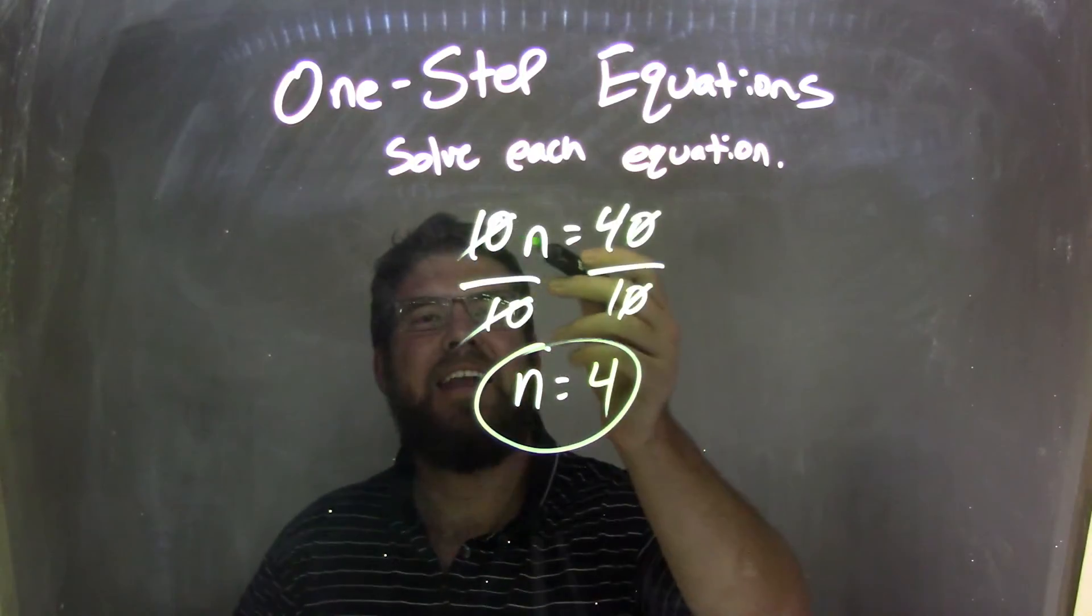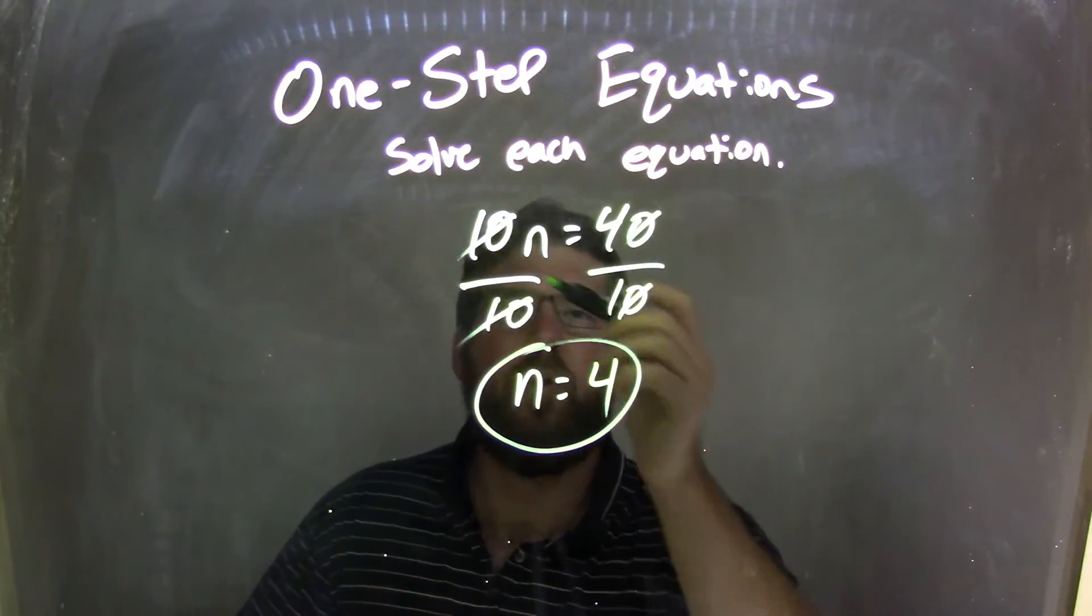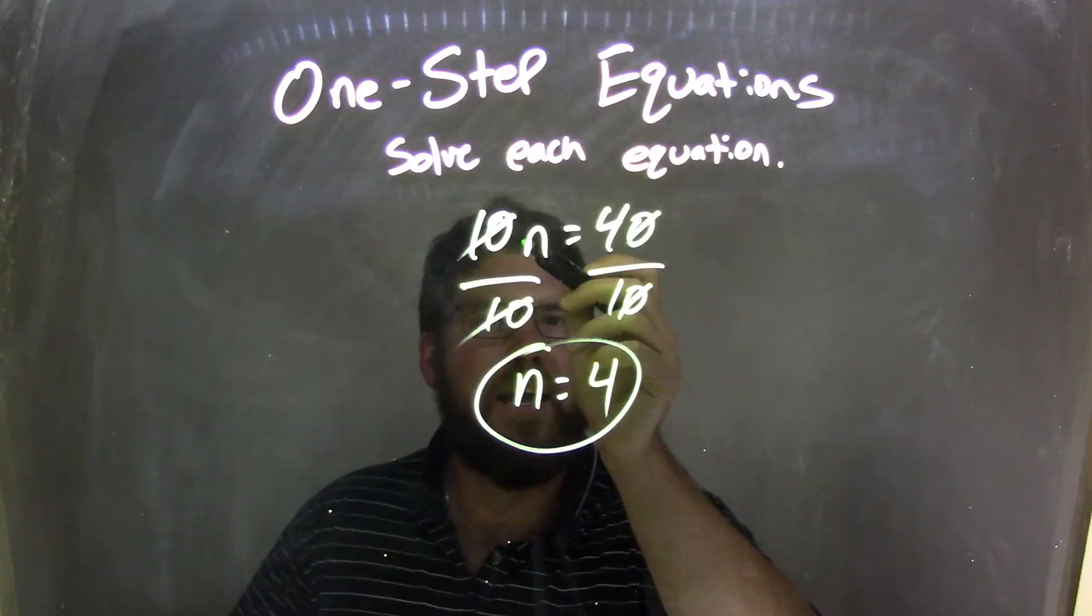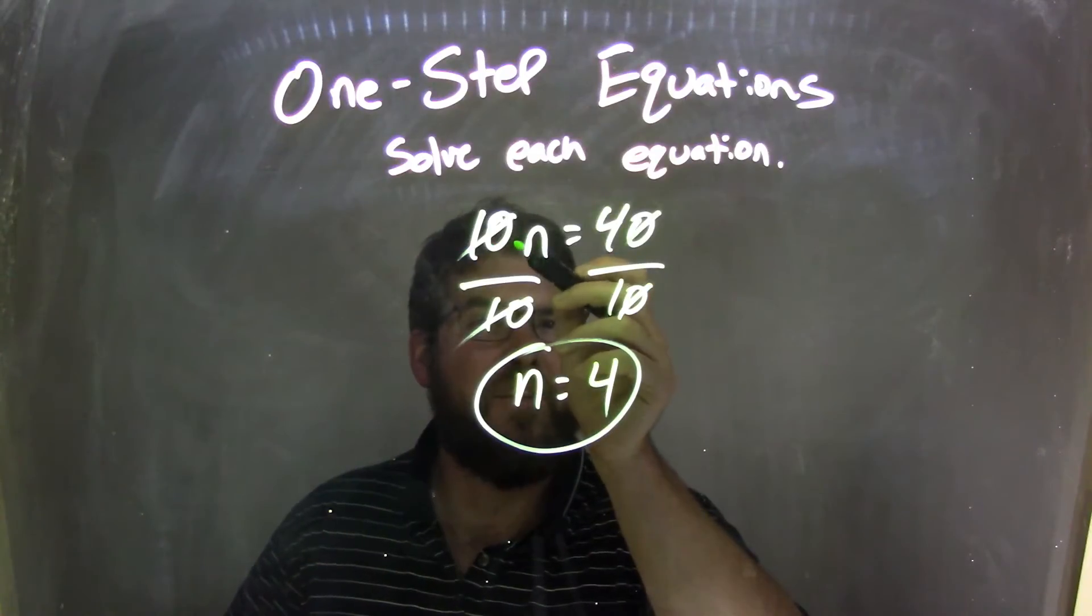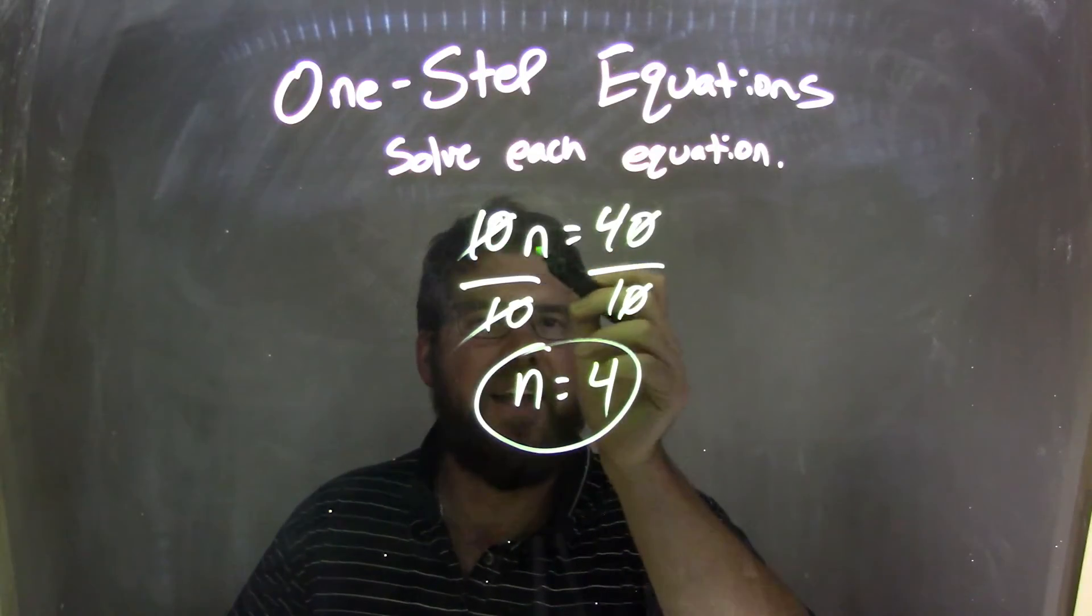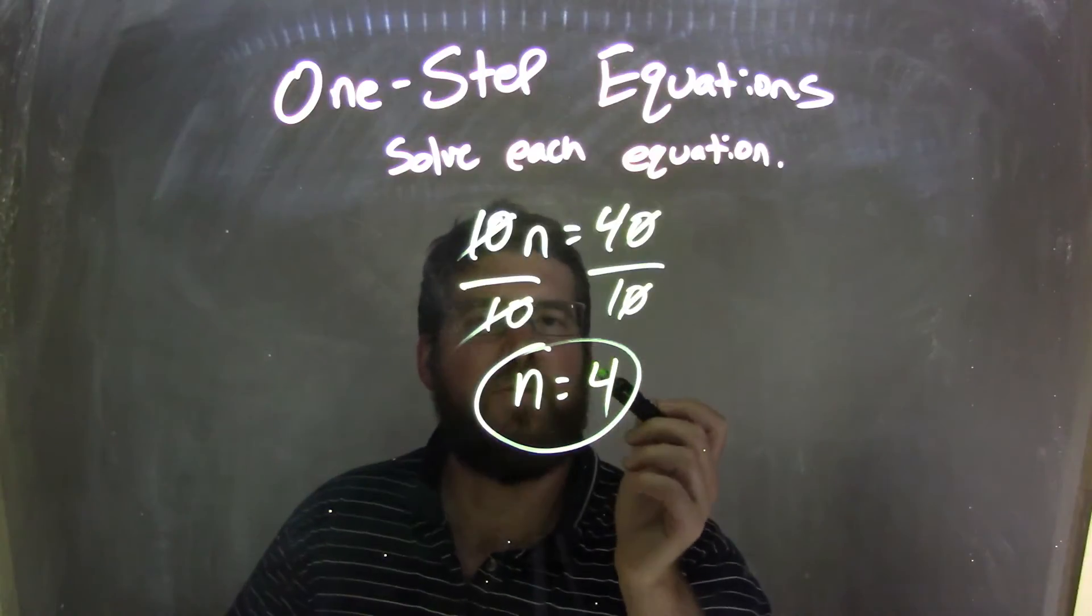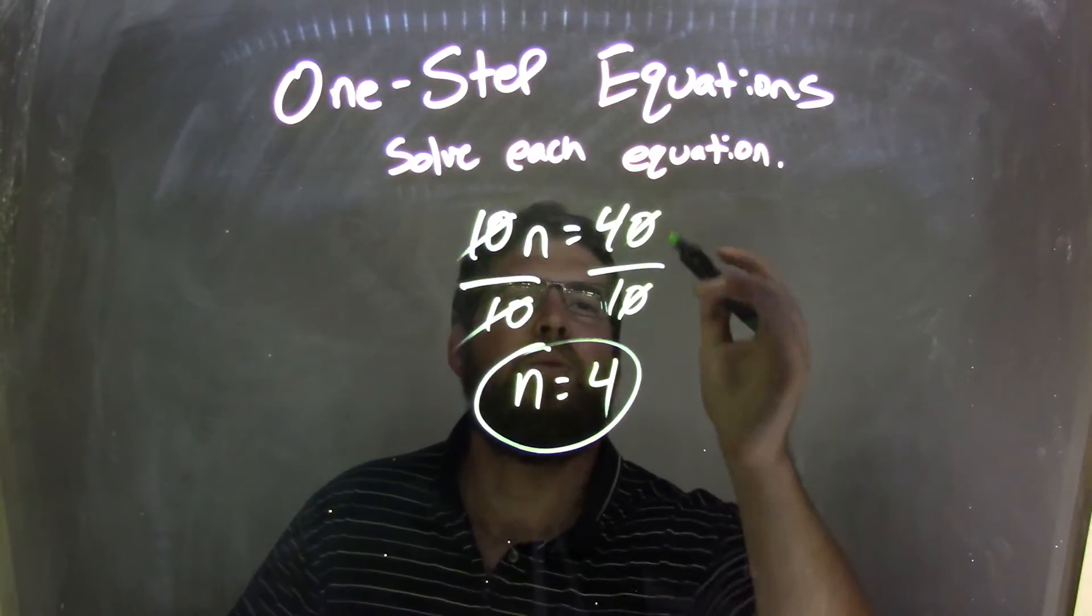Let's recap. We're given 10 times n equals 40. Well, 10 times n, right? The opposite of multiplication, we see 10 times n. That's really what's written. Divide by 10 is the opposite of multiplication, so divide both sides by 10.